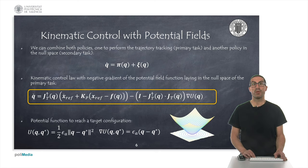For example, an attractive potential function towards a given configuration q star could be a quadratic function that penalizes the distance in the configuration space between the robot configuration and the target configuration. Its gradient would simply be the difference between the two vectors multiplied by a parameter, epsilon a, that defines the gain that regulates how fast or slow we want to converge to that configuration.